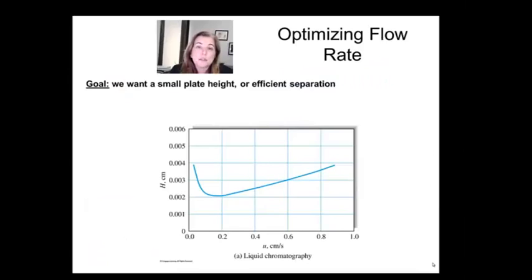So we want a small plate height or efficient separation. So we want H to be tiny. So one of the things you do when you optimize the separation is you actually mess around with your flow rate. You try it fast, you try it slow, and you watch what happens to your peak heights.